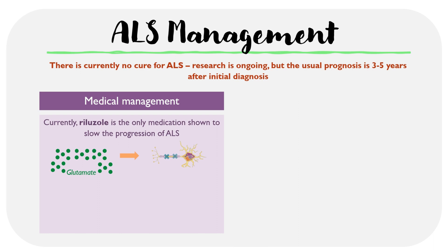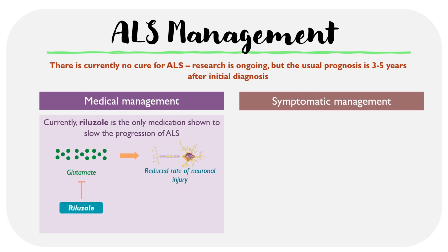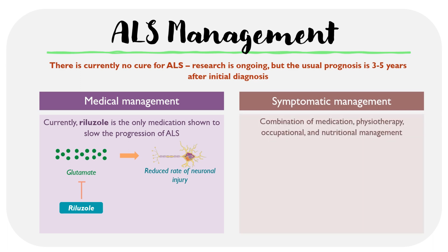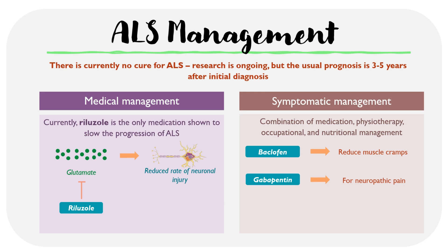This results in an increased rate of neuronal death or injury. Riluzole aims to work by reducing the levels of glutamate, thereby improving the neurotransmitter balance and resulting in a decreased rate of neuronal injury. Aside from medical management, patients may also be directed towards symptomatic management, including a combination of medication, physiotherapy, and nutritional treatment options. Key interventions include baclofen to reduce muscle spasms, gabapentin for neuropathic pain, and in later stages, non-invasive ventilation to help with respiratory effort.